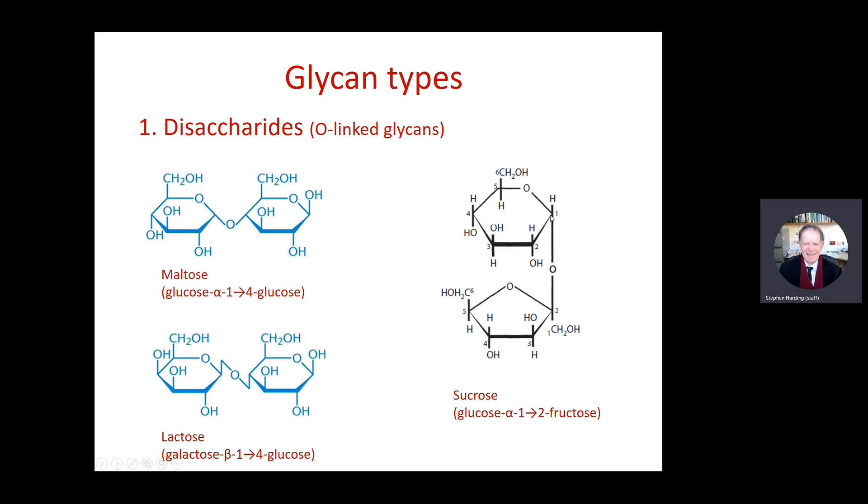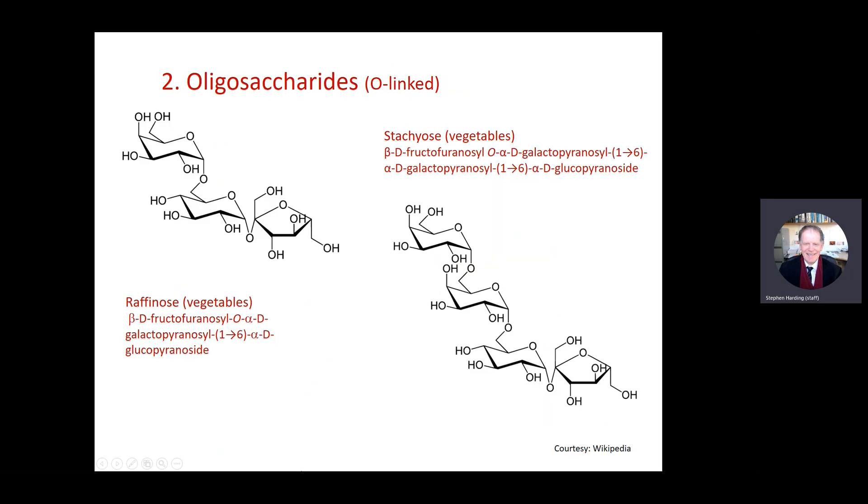This is sucrose, by the way, which is linked actually one, two, to a fructose residue at carbon atom number two. This is lactose which is galactose linked by a beta 1,4 link to a glucose molecule. So these are all glycosidic bonds. These are all glycan molecules.